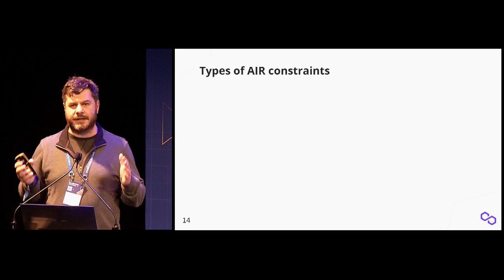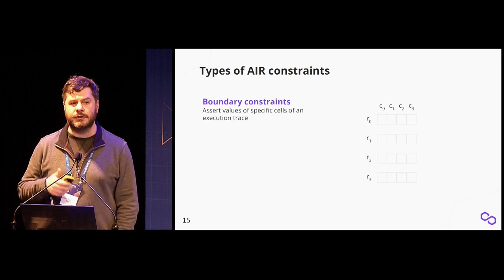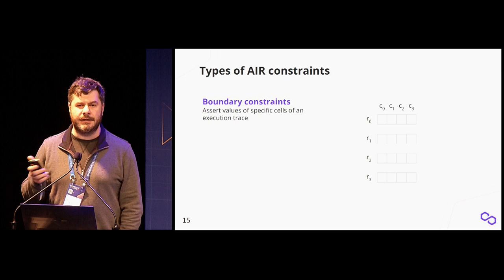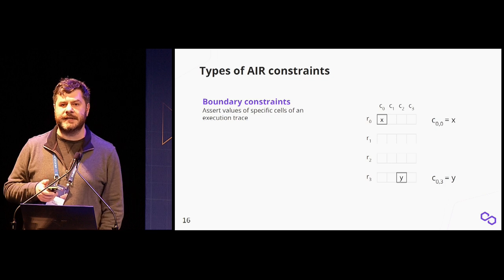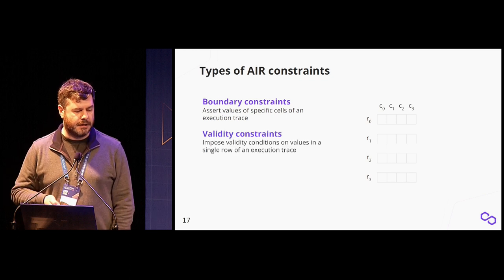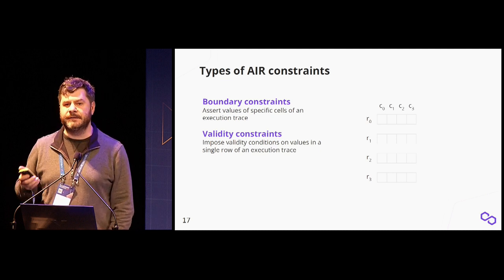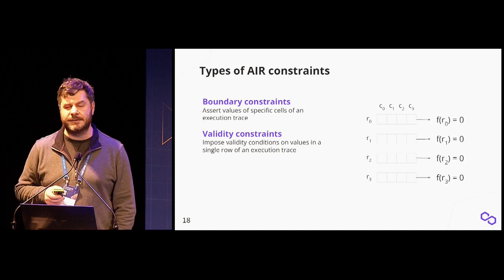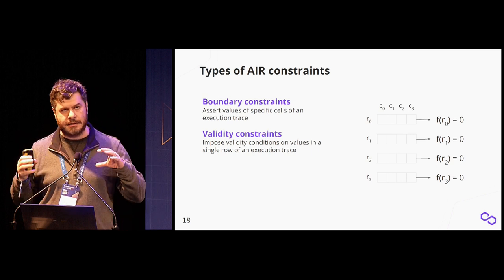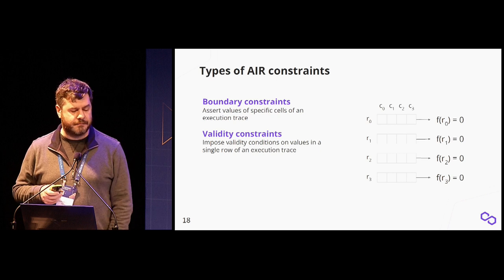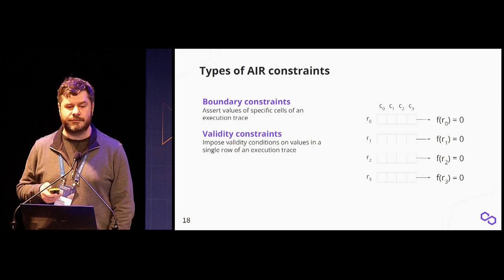It makes sense to group AIR constraints into different categories. One of those categories is boundary constraints, which are usually useful to specify inputs and outputs for a computation. Boundary constraints can assert that a specific cell in the trace has a specific value. Another category is validity constraints, which impose some validity conditions on a specific row or on all values in a given row—basically a function that takes all variables from a given row and outputs zero if the constraints are valid.